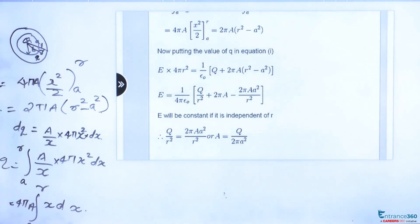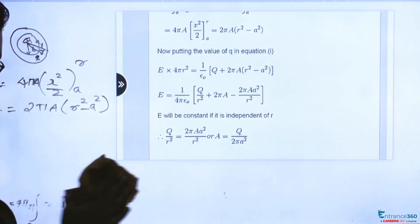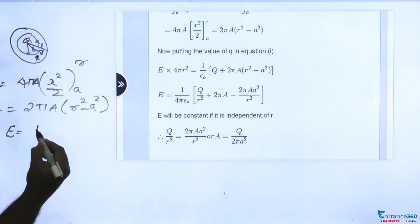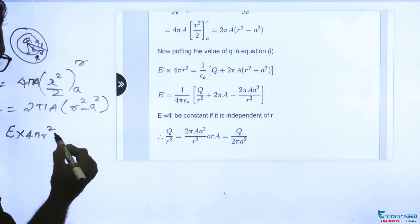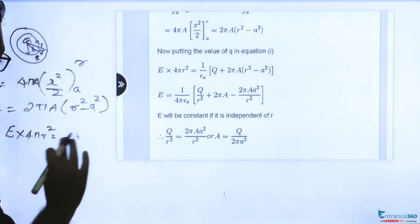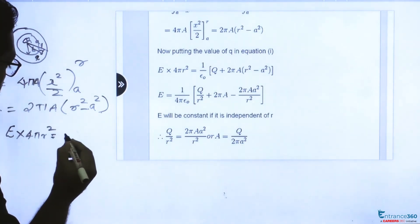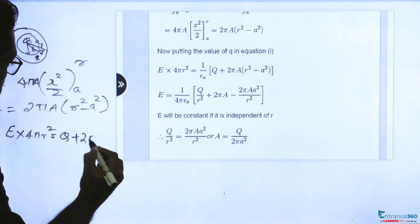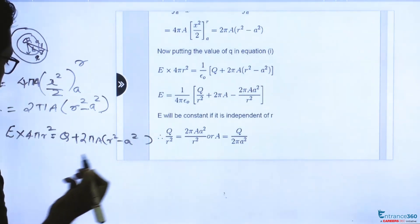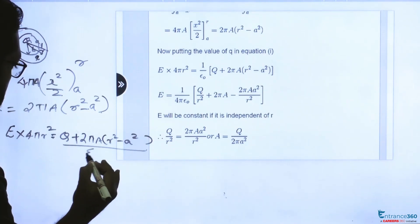Now by Gauss law we can find out that the electric field, by Gauss law we have E dot ds. It is a spherical surface, so net area is 4 pi R square equal to 2 pi A into net charge q plus small q is 2 pi A into R square minus A square upon epsilon 0.